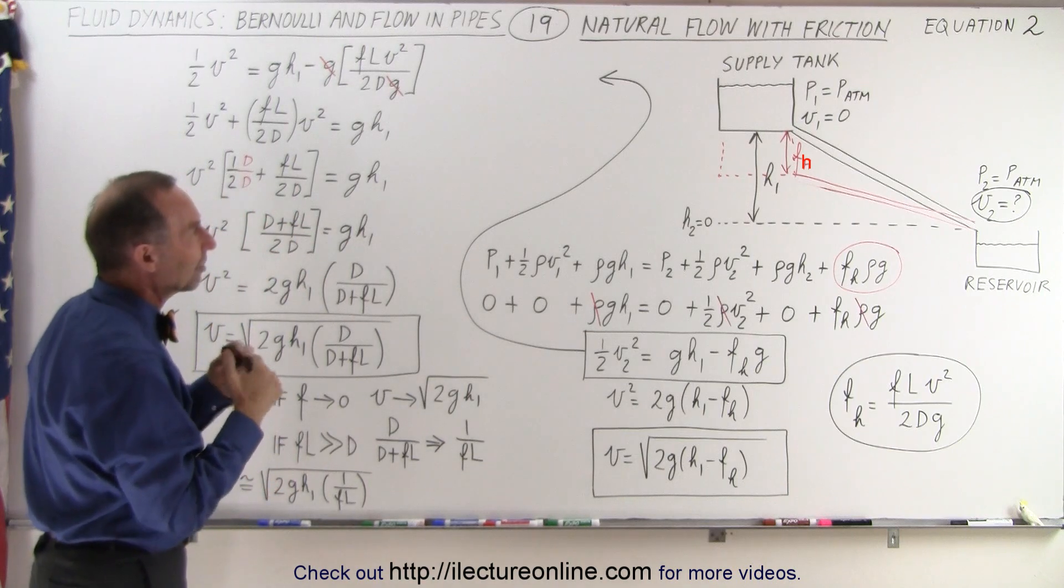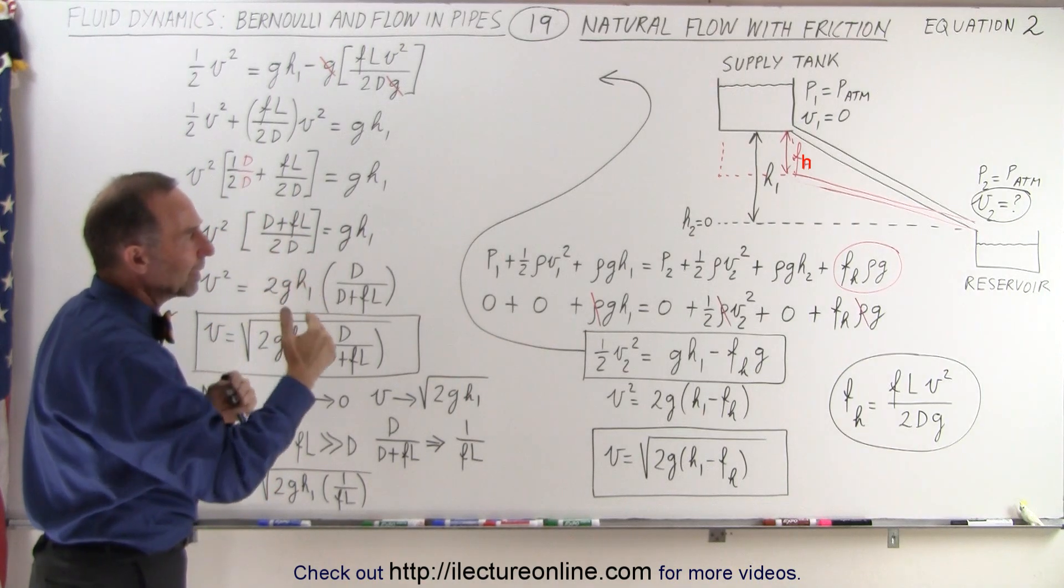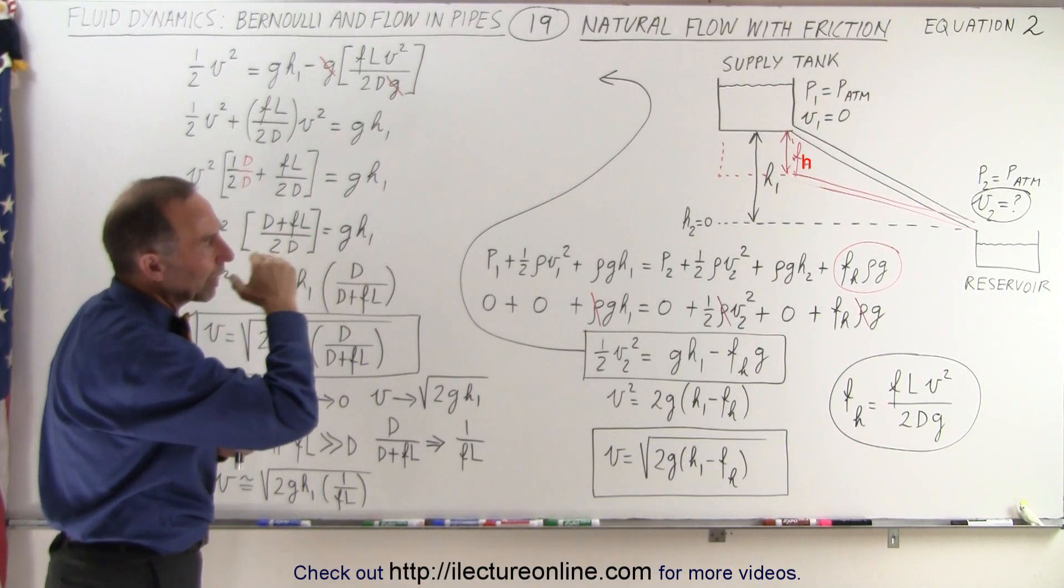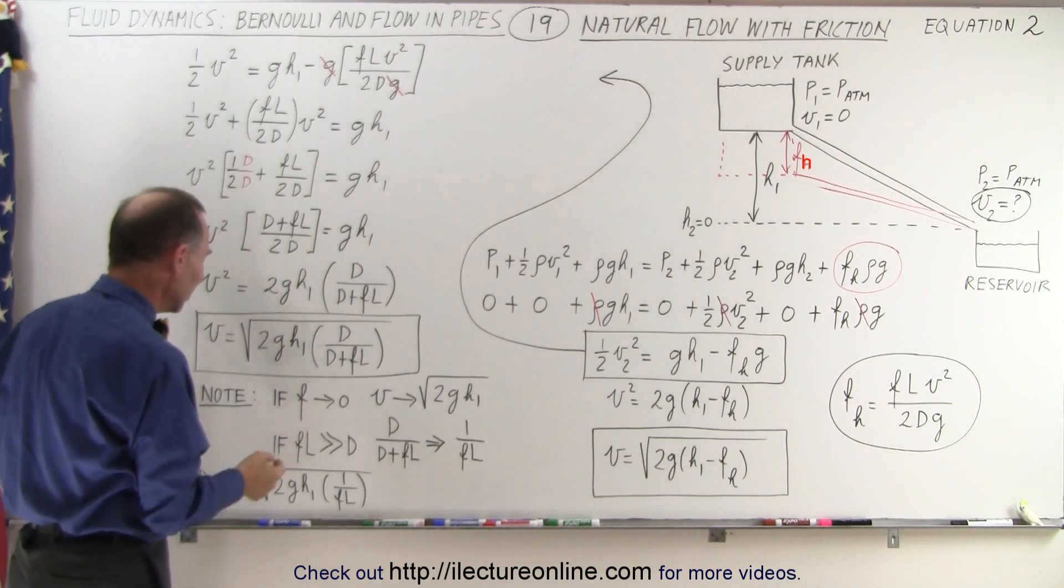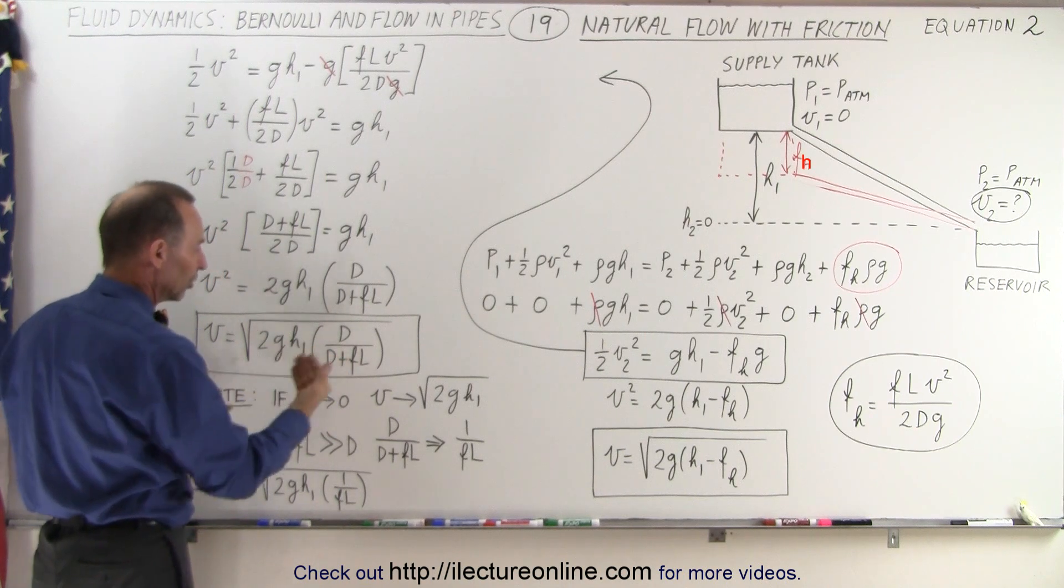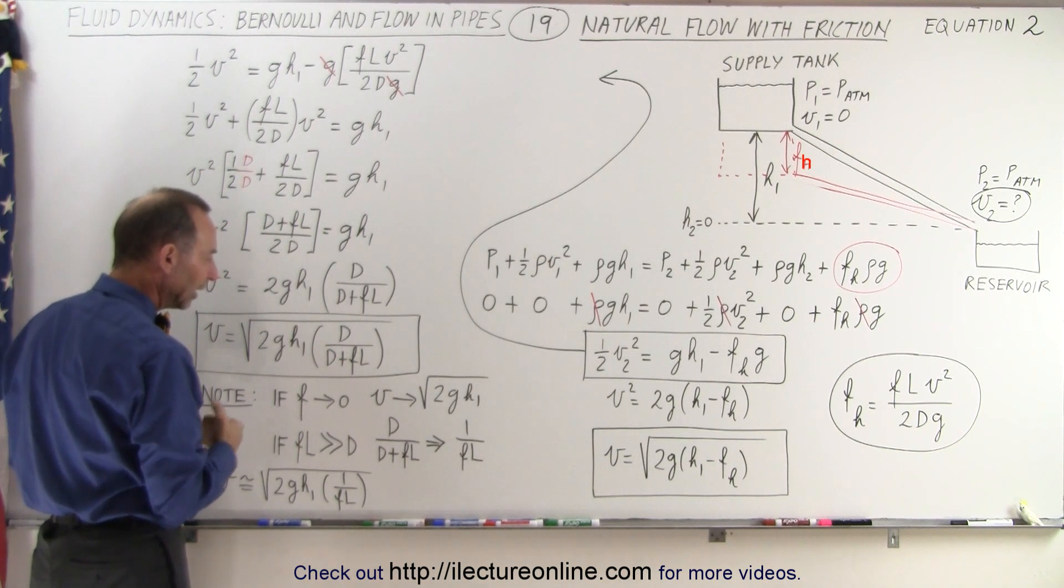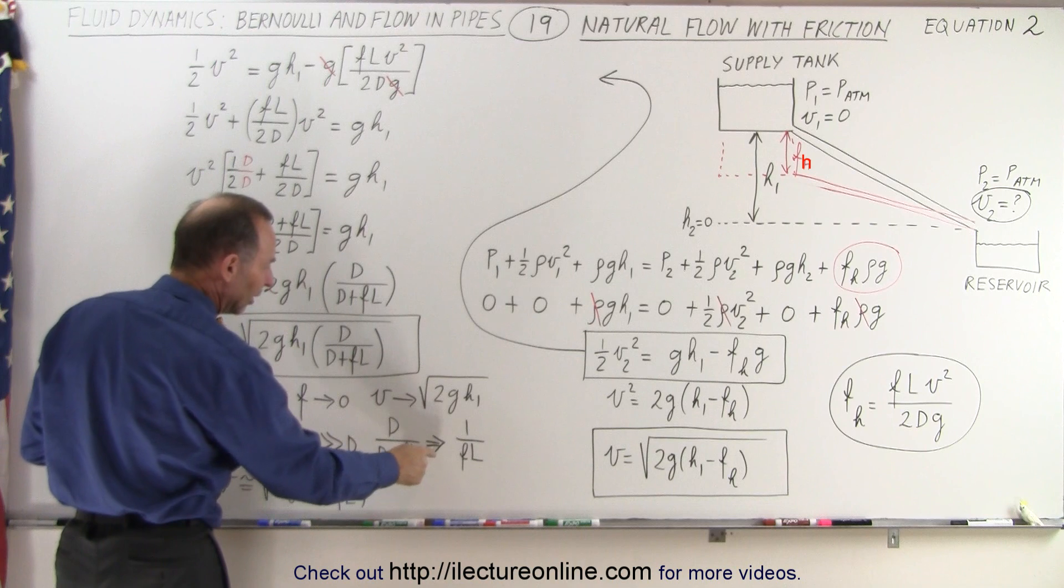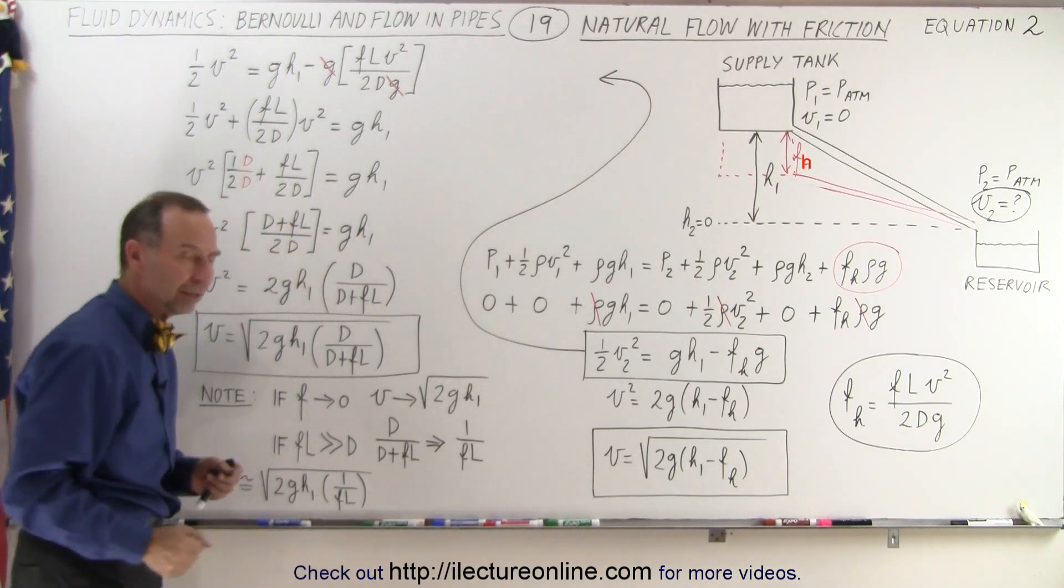But what we find is that as fh becomes bigger and bigger and bigger, the flow becomes slower and slower and slower. And so in the limit, when the term fl becomes much, much larger than d, the diameter of the pipe, then essentially this fraction then becomes close to 1 over f times l.